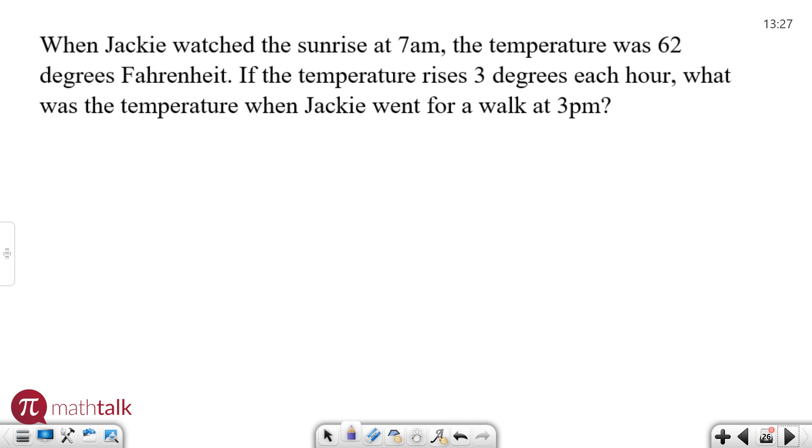From 7 a.m. to 3 p.m. is a certain number of hours. I need to figure that out. So from 7 a.m. to 3 p.m. is how many hours? Well, 7 to 12 p.m. is 5 hours, and then I have another 3 hours after that to get to 3, so I have 8 total hours.